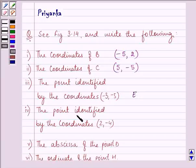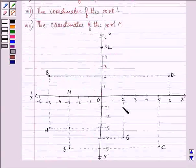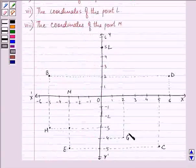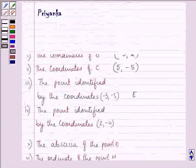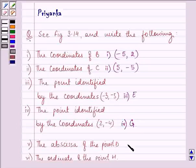Then the point identified by the coordinates (2, -4). So 2 and minus 4 means the point is G. So this is the answer of the first part, second part, third part, fourth part. Let's proceed on to the fifth part.